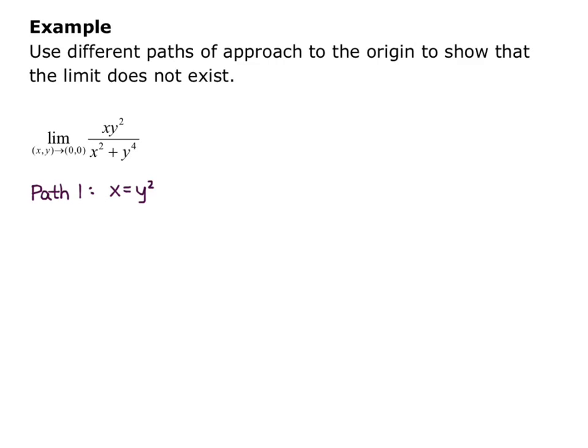The reason I'm going to do this is because if I plug in y² where the x² is on the bottom, then I'll get y² quantity squared. So I'll get y⁴ + y⁴ in the denominator. So that will simplify our function quite a bit.